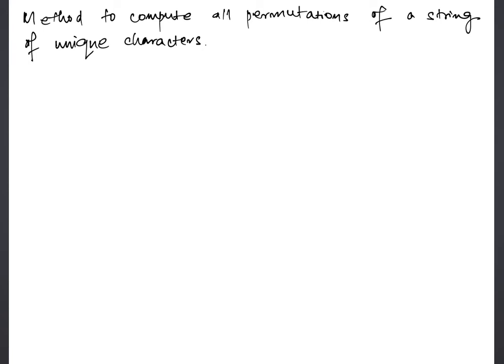Hi, in this video we are going to talk about a method to compute permutations of a string of unique characters. So say for instance if I have a string containing characters a1, a2 till an, what are the permutations I have of this string of unique characters?